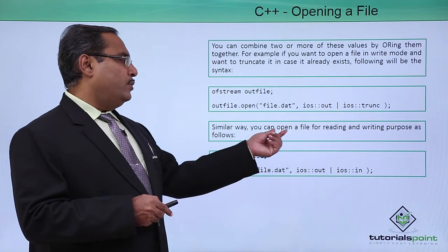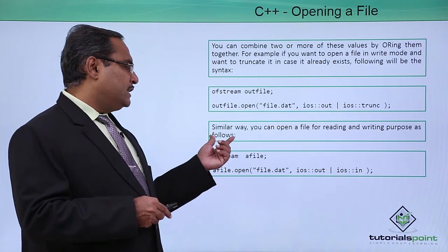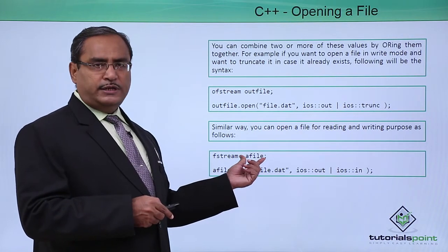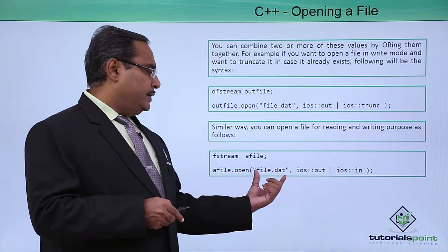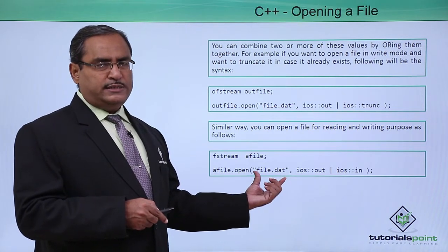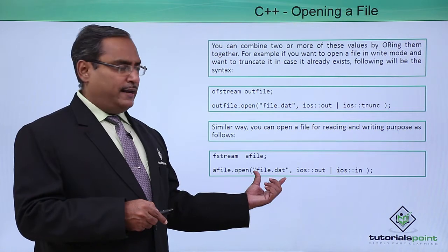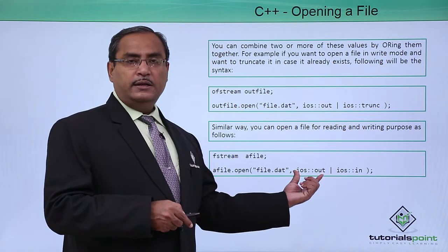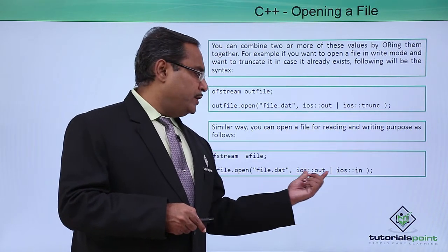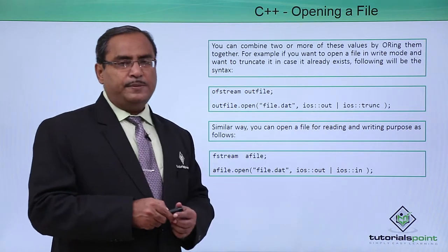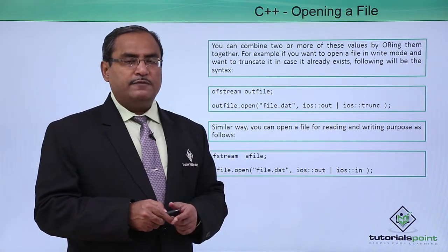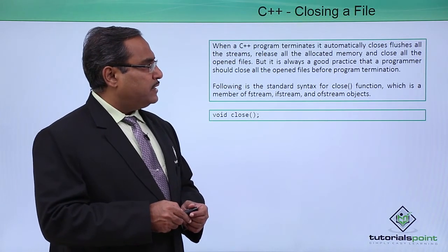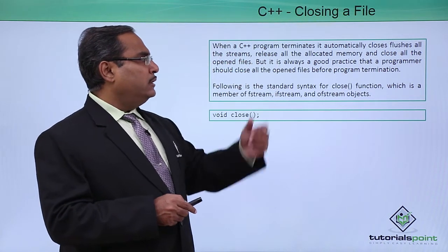Similarly, you can open a file for both reading and writing. In this case, we define an fstream class object named 'afile', and call afile.open(), passing the filename as a const character pointer. The filename string will not be changed. The respective modes are written together and must be separated by the OR operator.